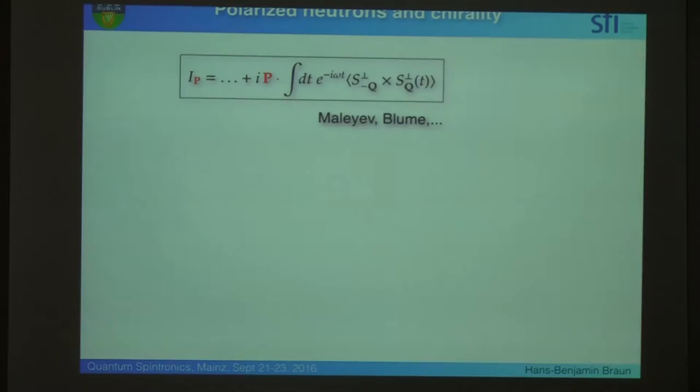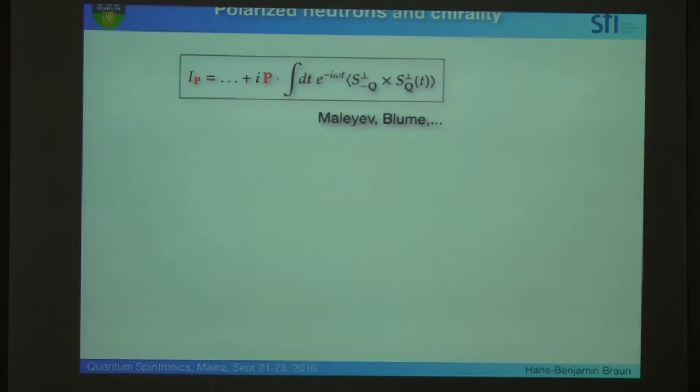And that's the experiment. So, that looks fairly nice, but it doesn't tell us yet anything about chirality and spin currents. For that, we have to use polarized neutrons, and polarized neutrons couple in this way to the spin configuration, which is not something which you normally find, sort of subtle thing, but the Russians did a lot on that.